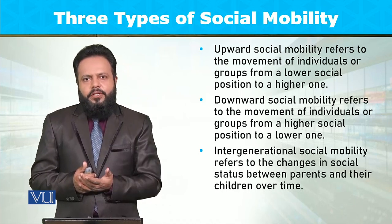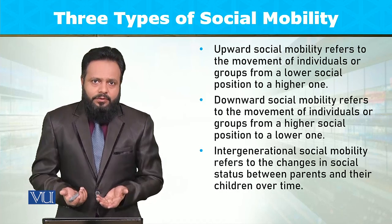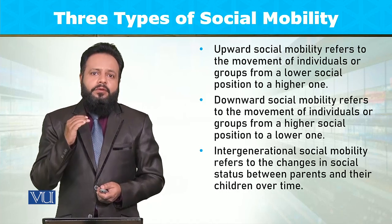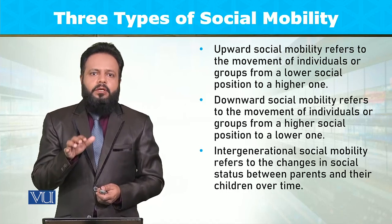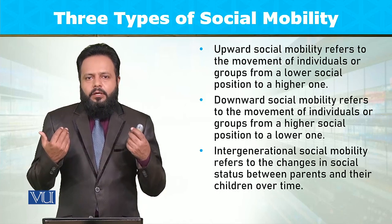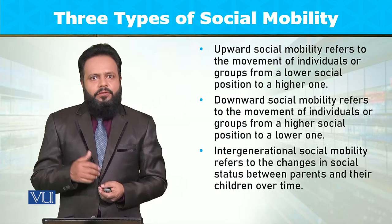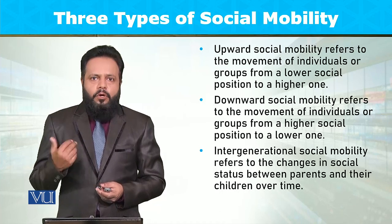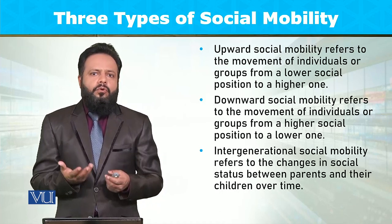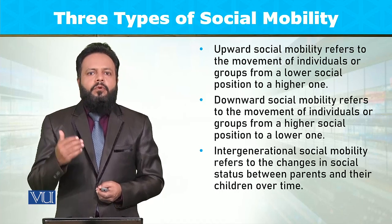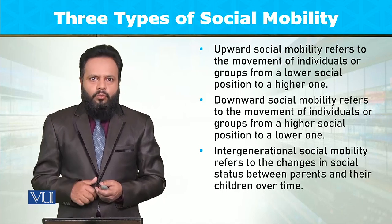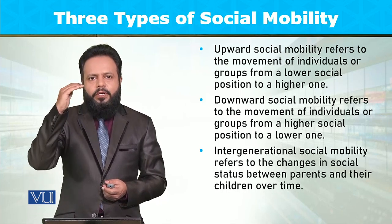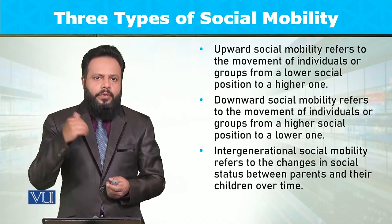لیکن جو downward social mobility ہے اس میں حالات و واقعات اس طرح کے ہو جاتے ہیں کہ لوگوں کے لیے اپنی existing social position کو sustain یا maintain رکھنا ممکن نہیں رہتا۔ مثلاً economic crisis کی صورت میں — جیسے recent past میں COVID-19 کی وجہ سے بہت سے لوگوں کی job چلی گئی، کاروبار ختم ہو گیا، اور بہت سے لوگ اپنے normal process of education سے محروم ہو گئے — اس طرح بہت سے لوگ اپنی existing position سے downward social mobility کی طرف گئے۔